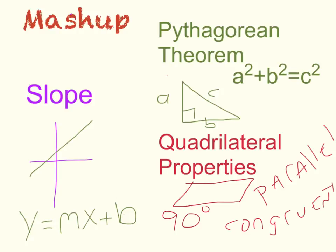Our final topic for this semester will be a mashup of things you already know. We're going to take slope, Pythagorean theorem, quadrilateral properties and mash them all together.